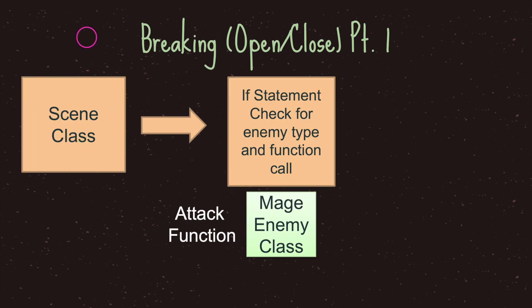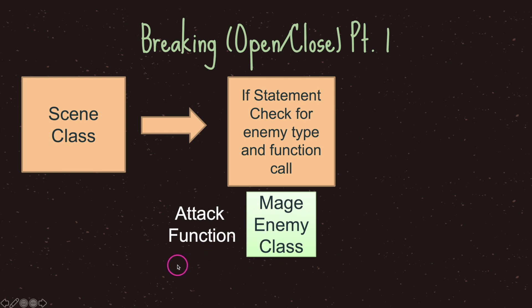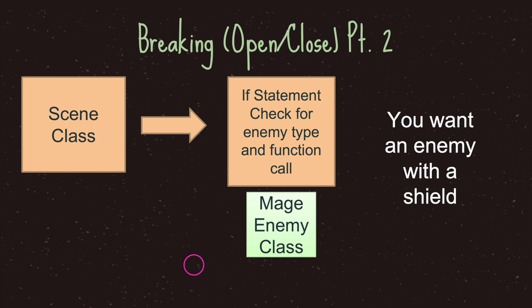Let's take a look at how we break the open and closed principle. In this example we have a scene class with an if statement that checks for enemy type and calls a function. We have a mage enemy class with an attack function, so the scene class has an if statement saying if the object is a mage, call its attack. As you continue programming your game you need to add more things — in this example we want to add an enemy with a shield.